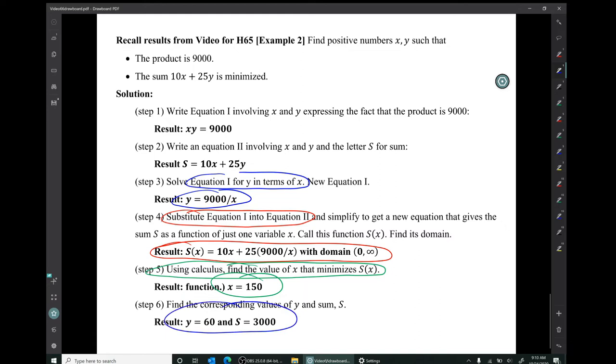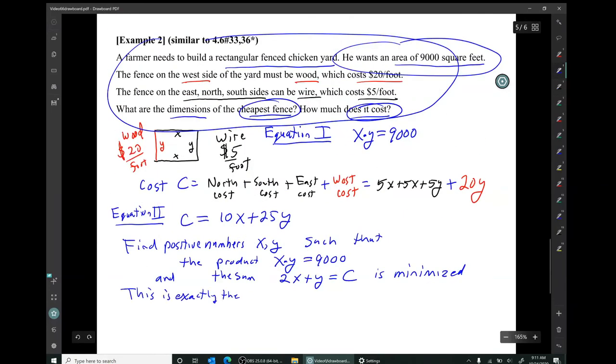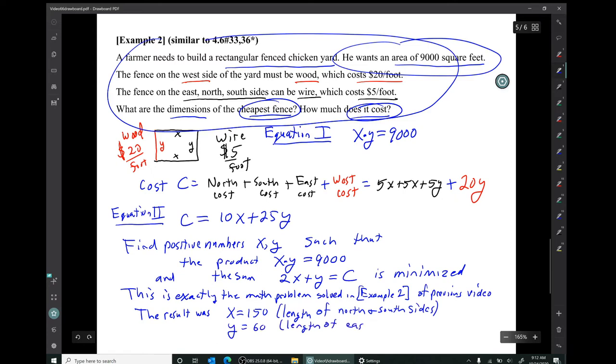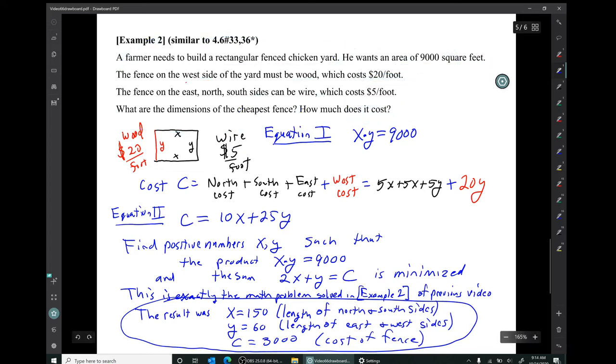If we had not already done this problem, we would go through these exact steps in the current example. Since we've already got this result, we can just quote the result. So there are results: the length of the north and south sides should be 150 feet, the length of the east and west sides should be 60 feet, and the resulting cost of the fence will be $3,000.